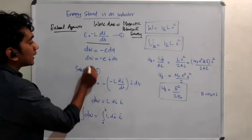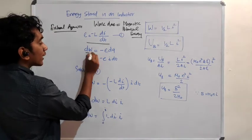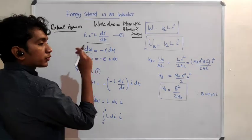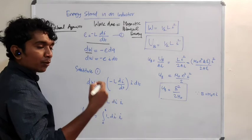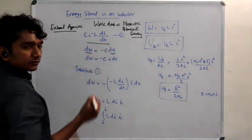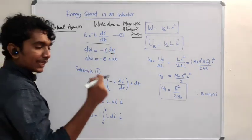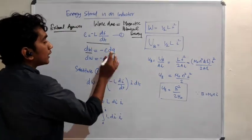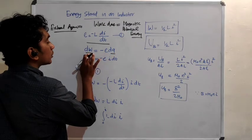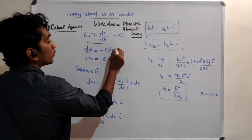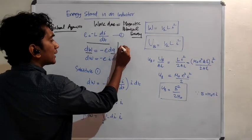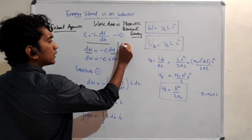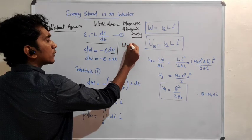We also know that the small work done DW to move a small charge DQ is equal to DW = minus E times DQ. This comes from W = QV, where V is the potential difference, Q is the charge, and W is the work done.